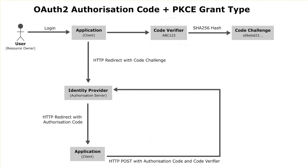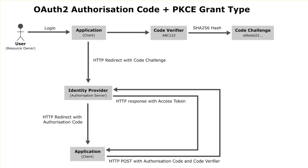When the identity provider receives the code verifier, it will perform a SHA-256 hash again and compare it to the original code challenge which was sent by the application. If the two hashes match, the identity provider will return the access token back to the application, and the application is then free to use that access token to access any resources on behalf of the user.